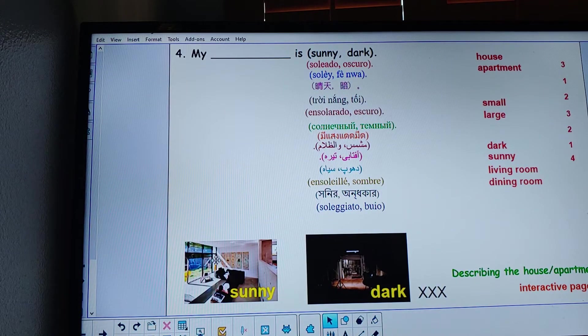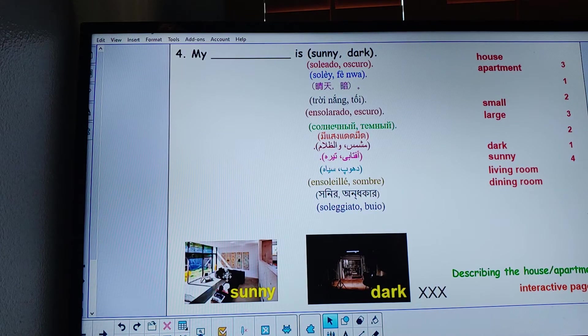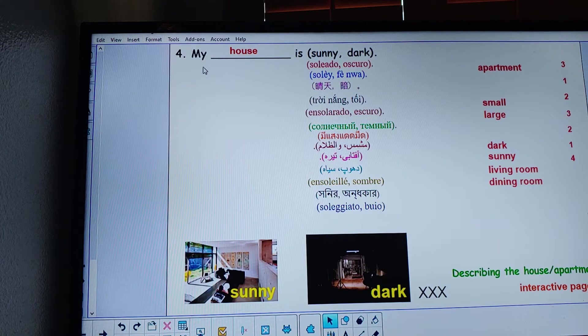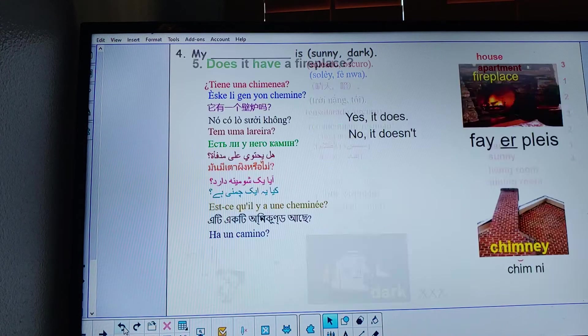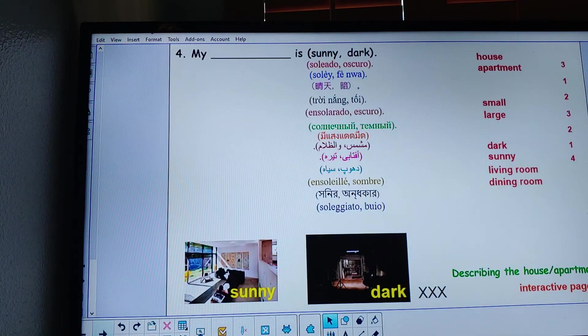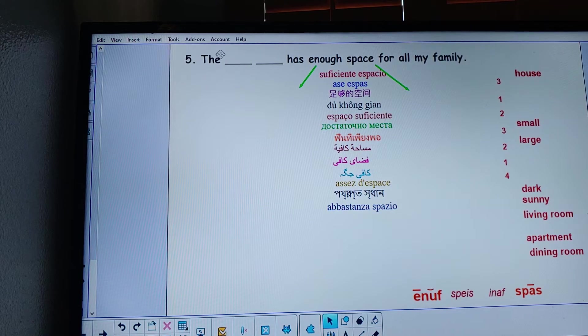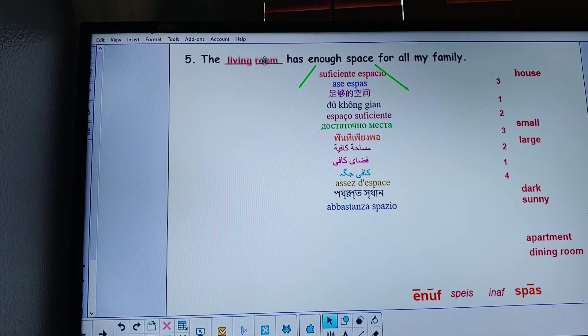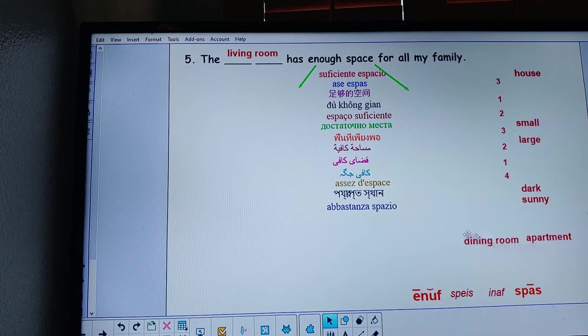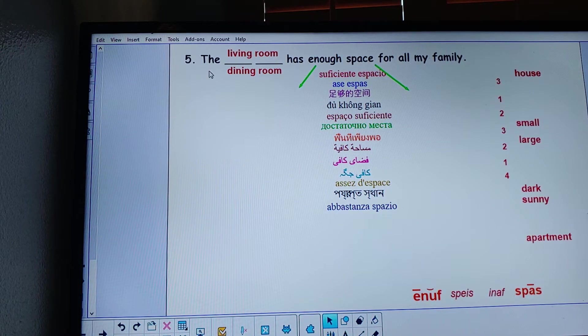Let's take a look at sunny and dark. Sunny, dark. My house is sunny. My house is dark. The living room has enough space for my family. Enough space. This can be living room, la sala, or dining room. The living room has enough space for my family.